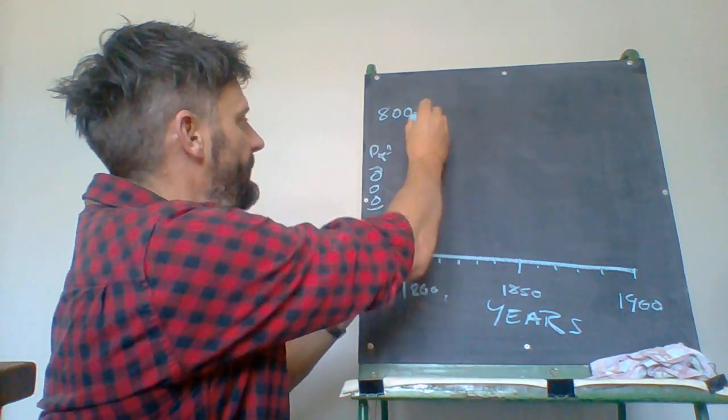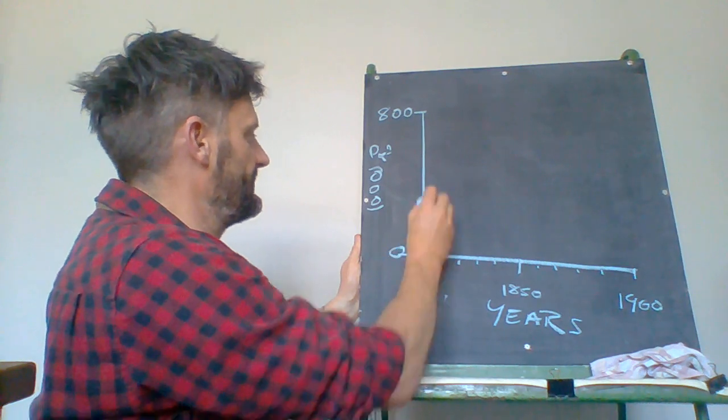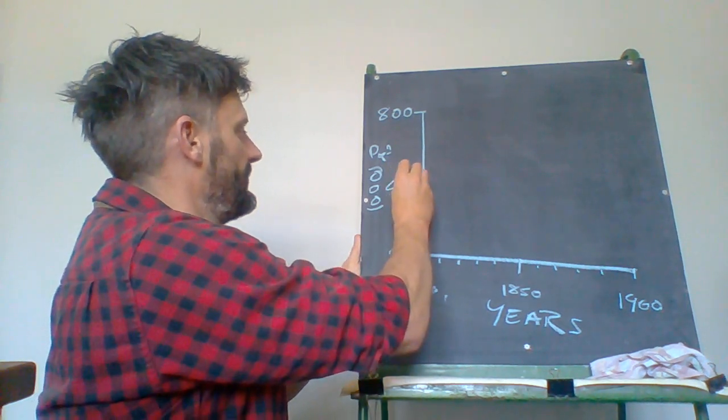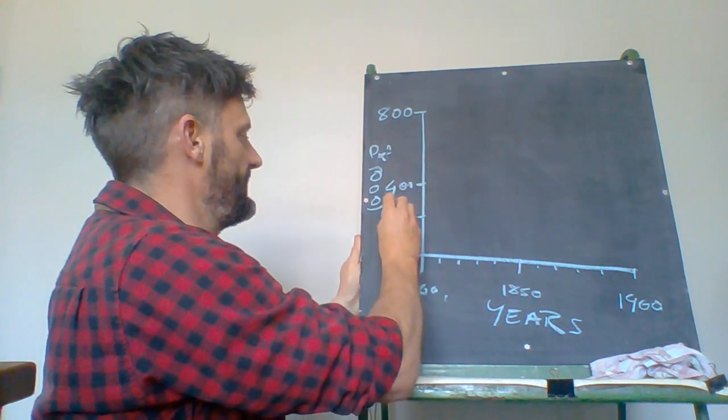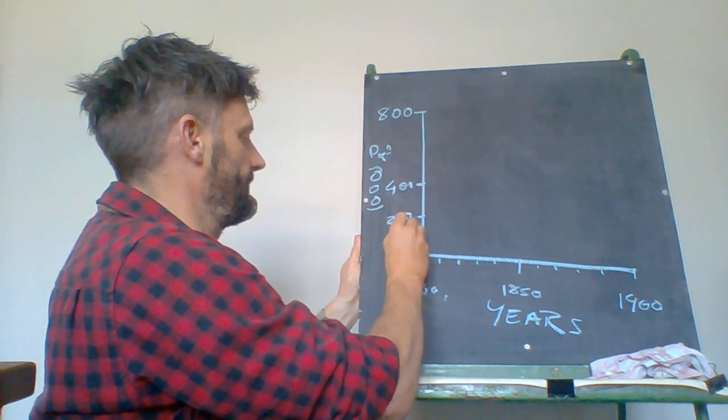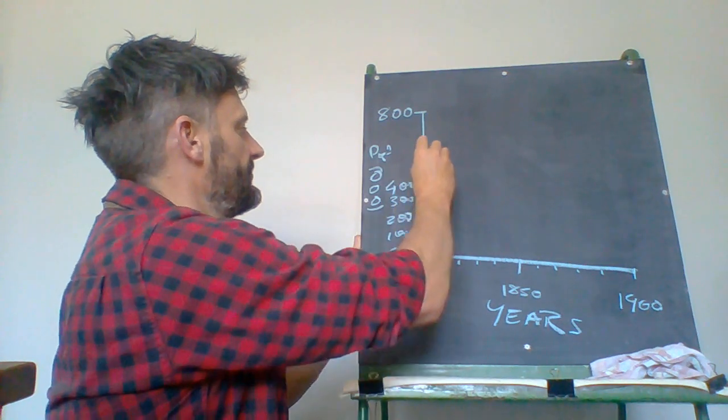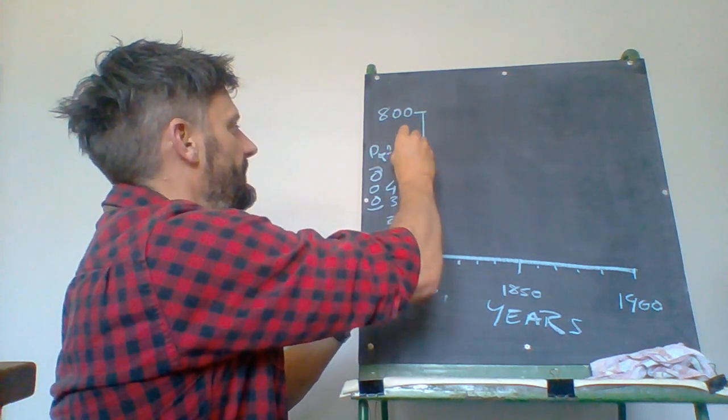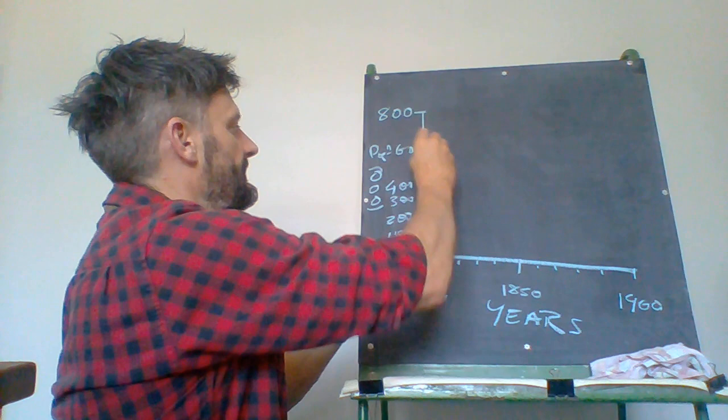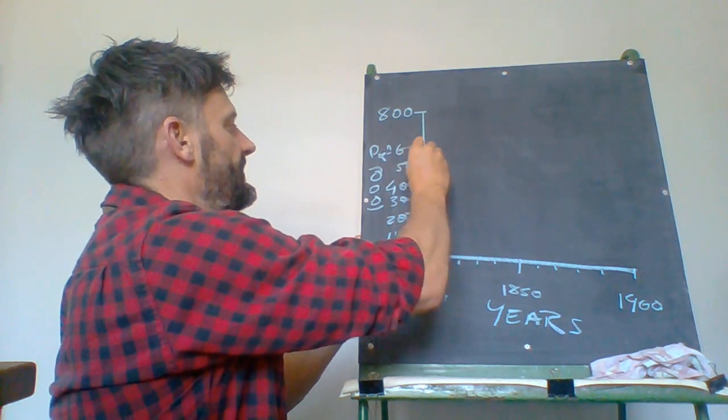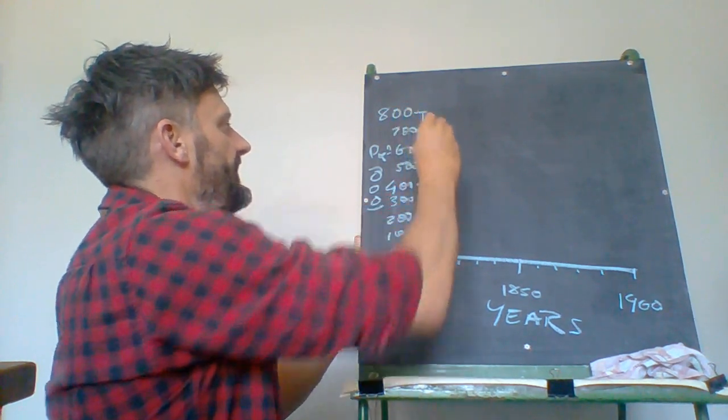Same thing again, halfway between that and zero it's going to be 400. Halfway between that it's going to be 200, 100, 300, six, five and seven like that.